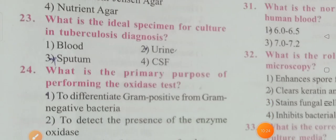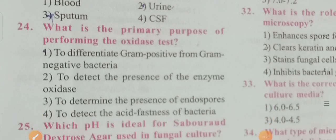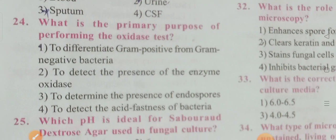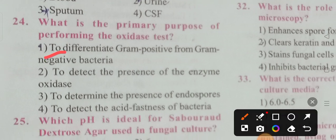What is the primary purpose of performing the oxidase test? Options: differentiate gram-positive from gram-negative bacteria, detect enzyme acids, determine endospores, detect acid-fastness. Option 1 is the correct answer — the main purpose of the oxidase test is to differentiate gram-positive from gram-negative bacteria.